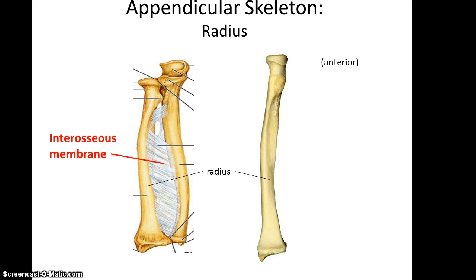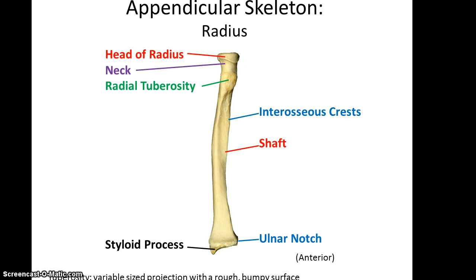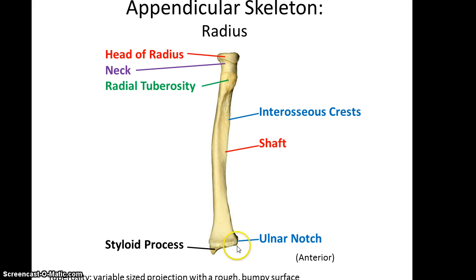The radius is connected by the interosseous membrane to the ulna. The radius's proximal end has the head of the radius, and below that is the neck. Then you see a large rough bump referred to as the radial tuberosity, followed by the long shaft. Along the shaft is the interosseous crest, where the interosseous membrane attaches to the radius. At the distal end, you see a styloid process and the ulnar notch, which articulates with the ulna.